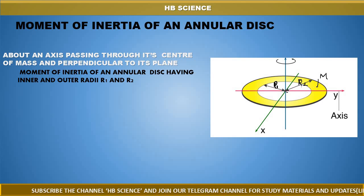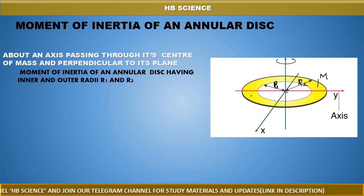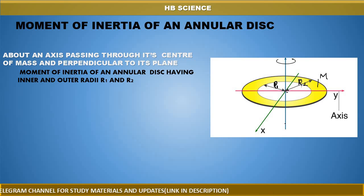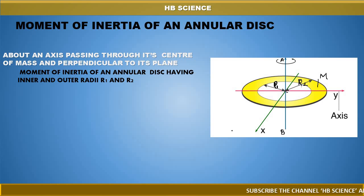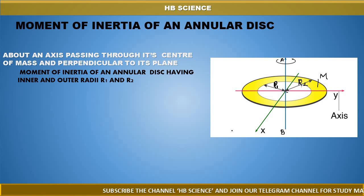Now, this is the plane. This plane is perpendicular to its center of mass. So this blue color axis is the axis A-B. We have to find the moment of inertia of this annular disk about the axis A-B. Clear, right? Yes, that's why we have to find it.